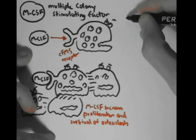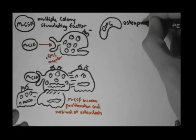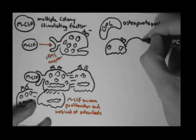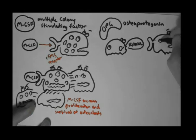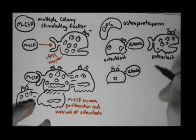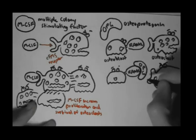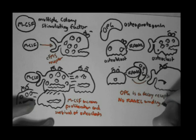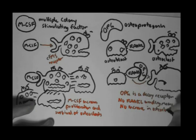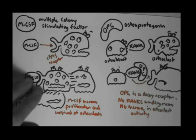OPG stands for osteoproteinogen. While osteoblasts have rank ligands that increase osteoclastic activity, OPG prevents rank ligand from binding to the rank receptor on osteoclasts, acting as a decoy receptor. No rank binding to osteoclasts means no increase in osteoclastic activity. This concludes part 2. Part 3 will look into the hormones vitamin D, calcitonin, and parathyroid hormone and how they regulate bone homeostasis.